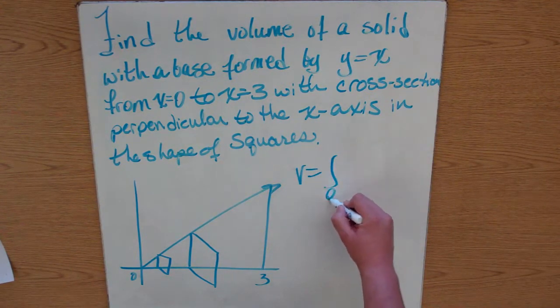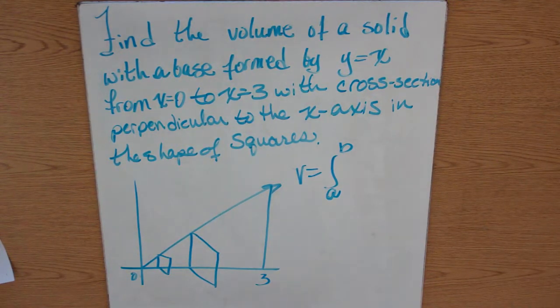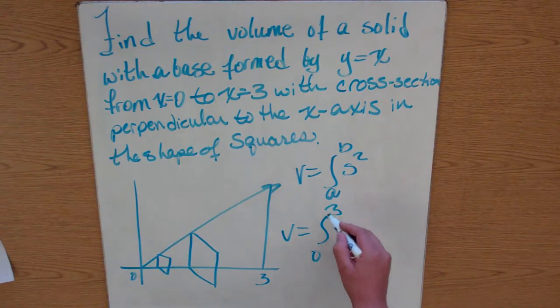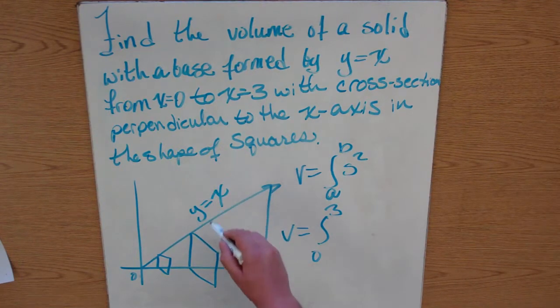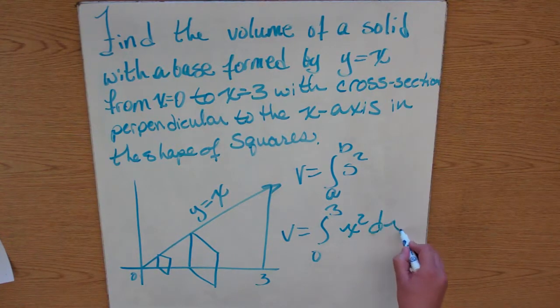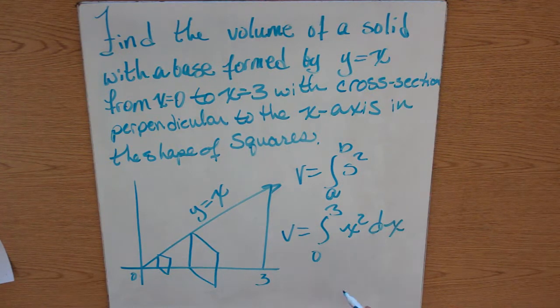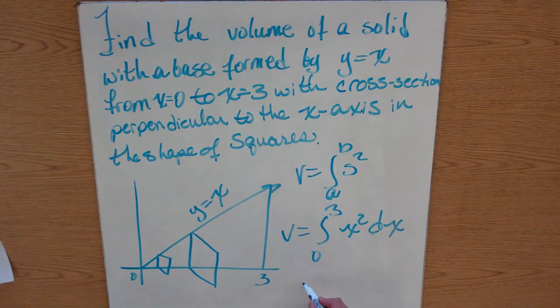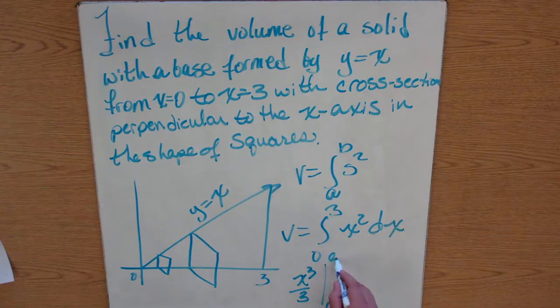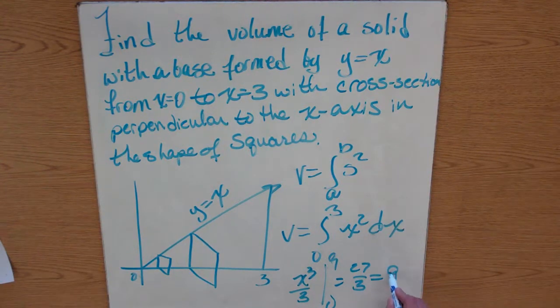So our volume from a to b, and our area formula we're going to use is s squared. Volume from a to b of our function here is y equals x, so s would be x, so x squared dx. Now you simply integrate this from 0 to 3, and when you integrate this, you're going to get x cubed over 3 from 0 to 3. Of course, you can throw out the 0. 9 cubed is 27 divided by 3, which is 9.